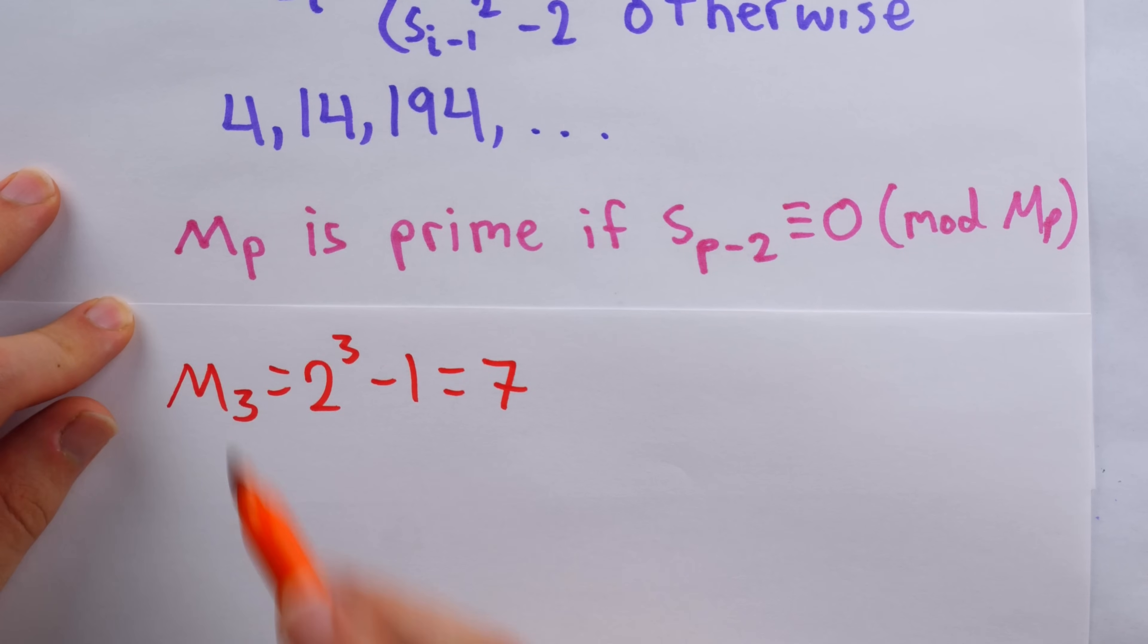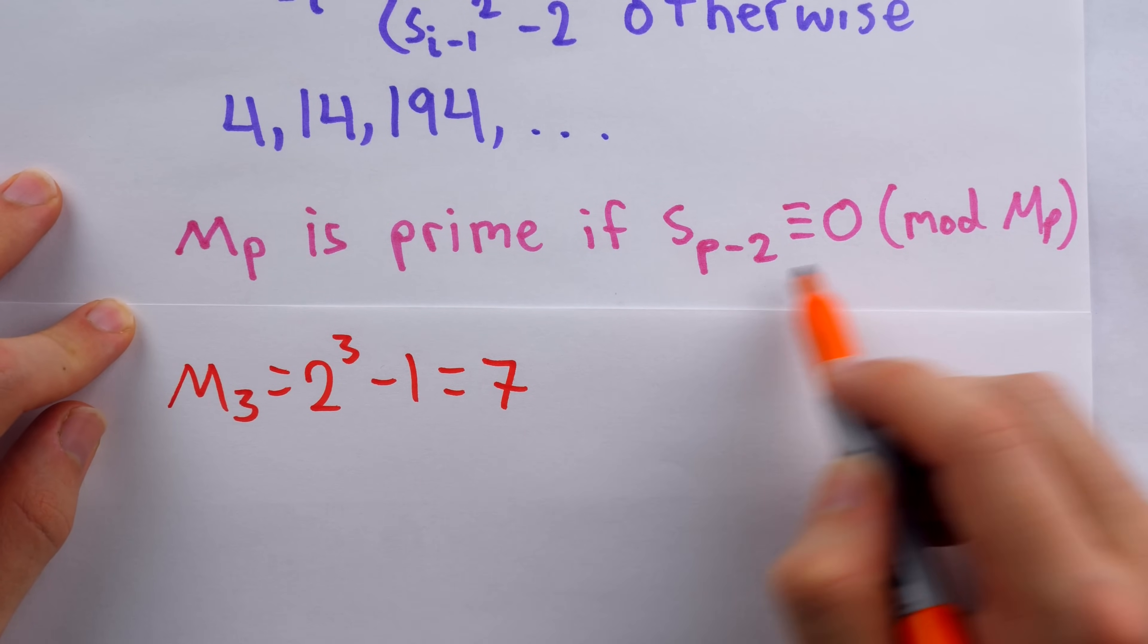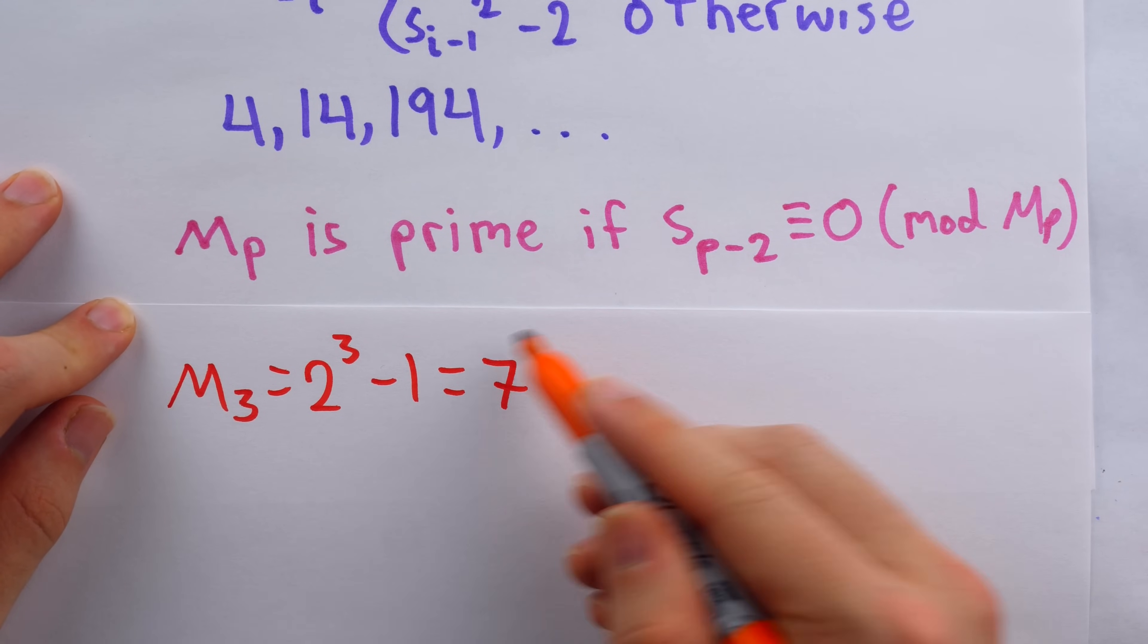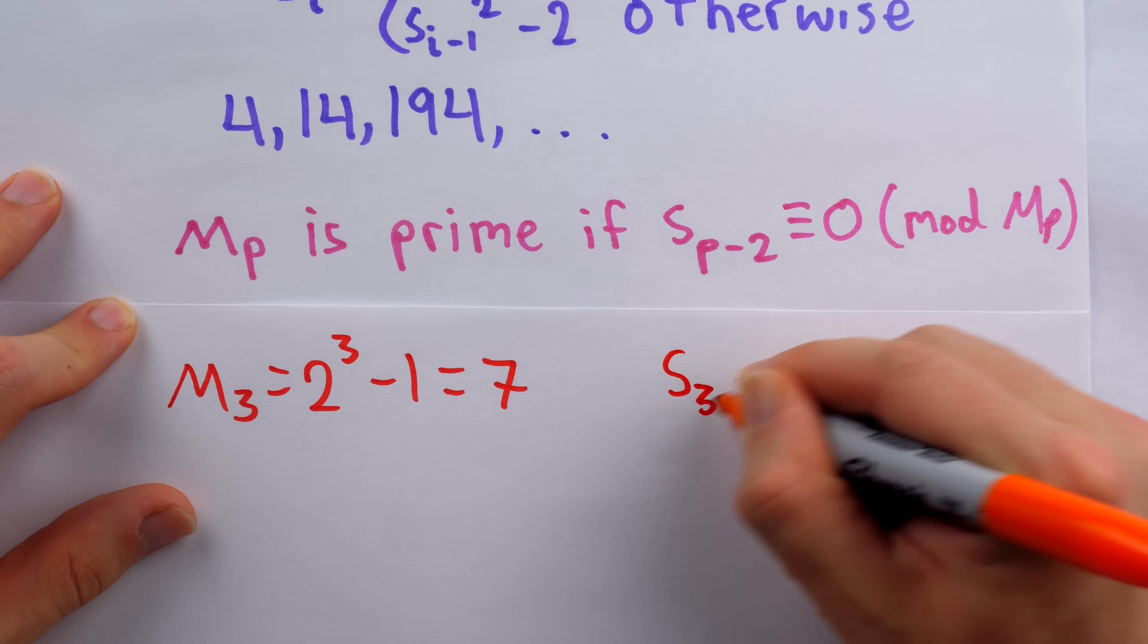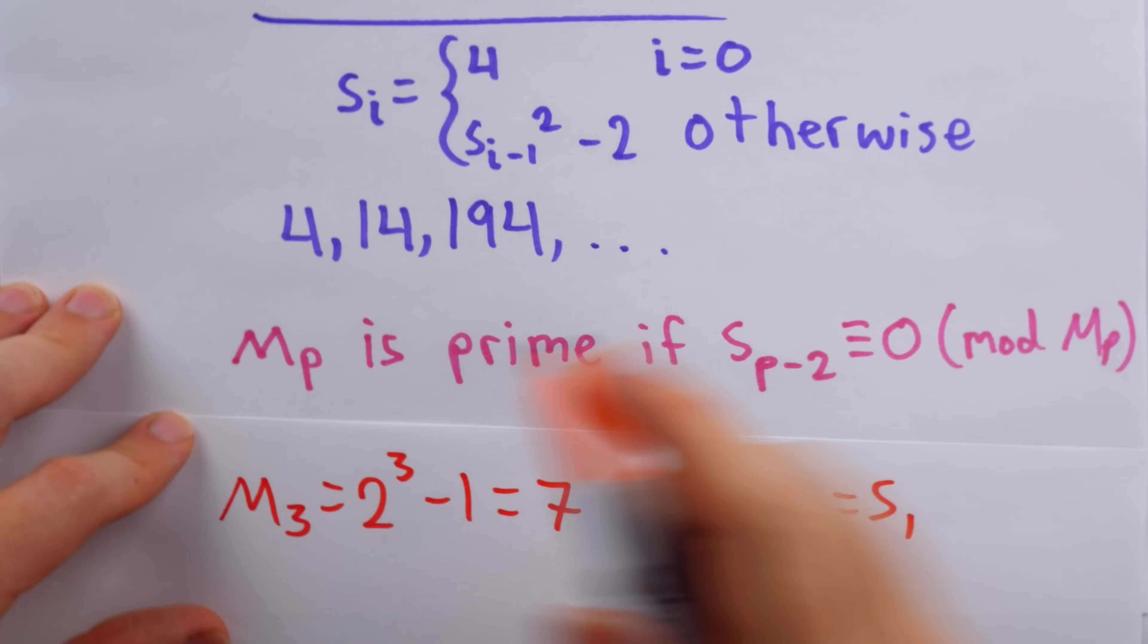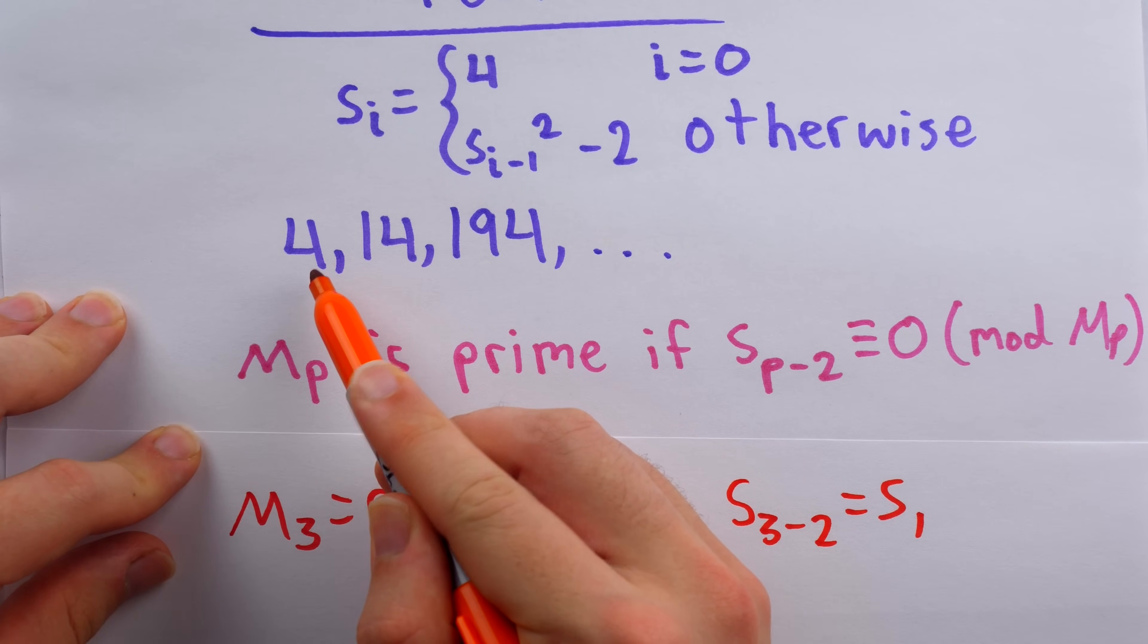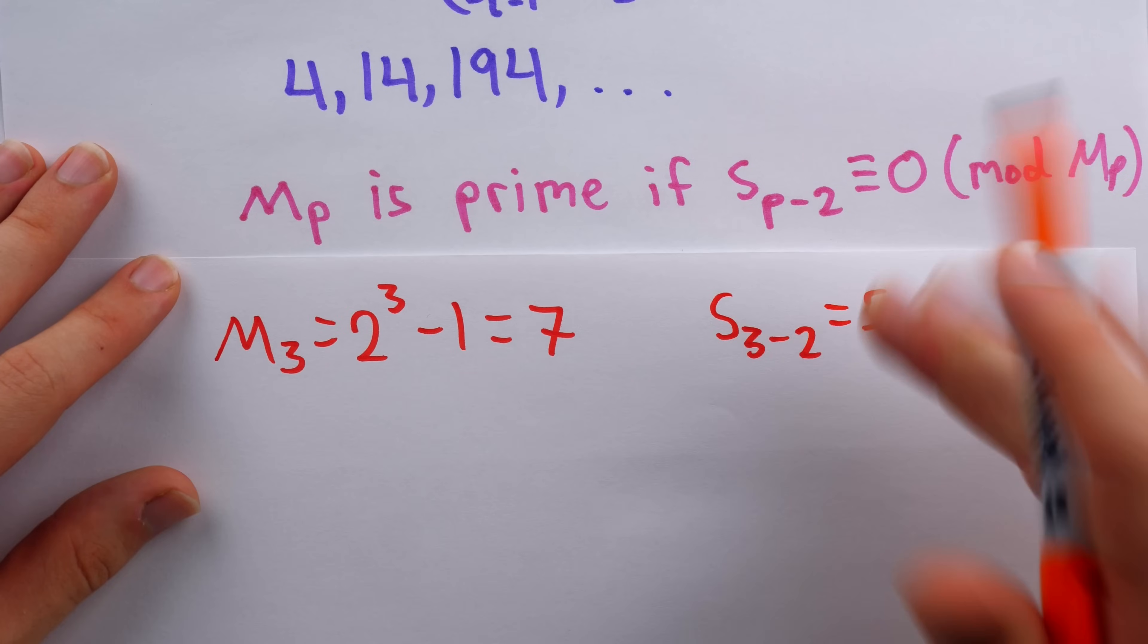Remember, in the sequence, we need to look at s_{p-2} and check if that's a multiple of the number that is to be checked, which is in this case seven. So for M_3, we would have to look at s_{3-2}, which of course is s_1. So not s_0, the initial term of the sequence, but s_1, the second term of the sequence, which is 14.